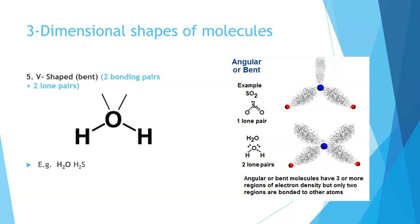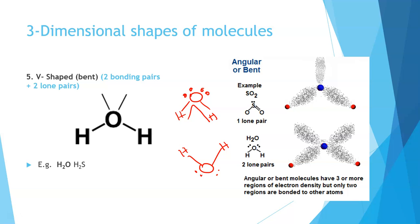The next shape is V-shaped or bent — either term can be used. This is where we have two bonding pairs and two lone pairs, as we saw in water. The two non-bonding pairs and two bonding pairs form the shape of an inverted V. The non-bonding pairs push the hydrogens away from a linear arrangement. We also see this in SO2, H2O, and OF2, where oxygen is the central atom bonded to two other atoms.